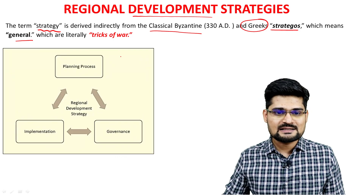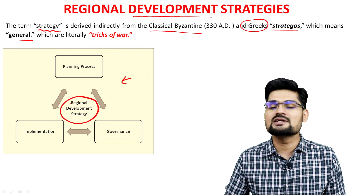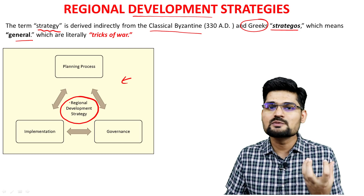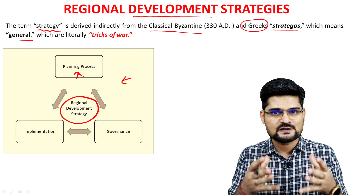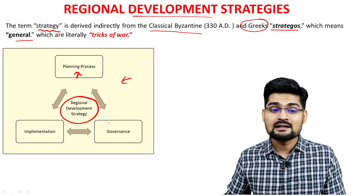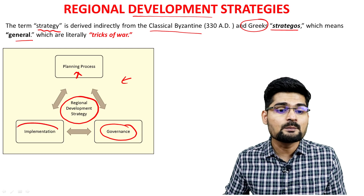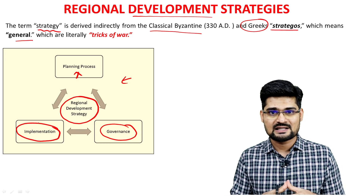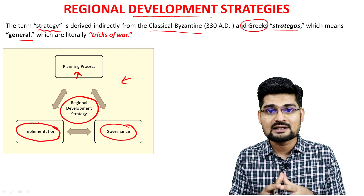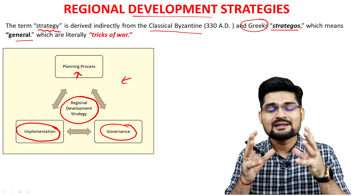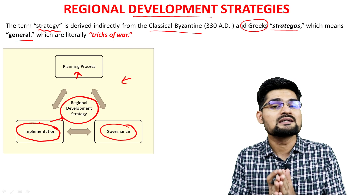Looking at a flow diagram of strategy-making at the regional level for development, the basic attributes are: first, the process of planning, which we have discussed in earlier lectures; second, governance as the major pillar; and third, implementation of these planning processes along with monitoring and changing plans in accordance with context. These three pillars — planning, governance, and implementation — constitute regional development strategies.